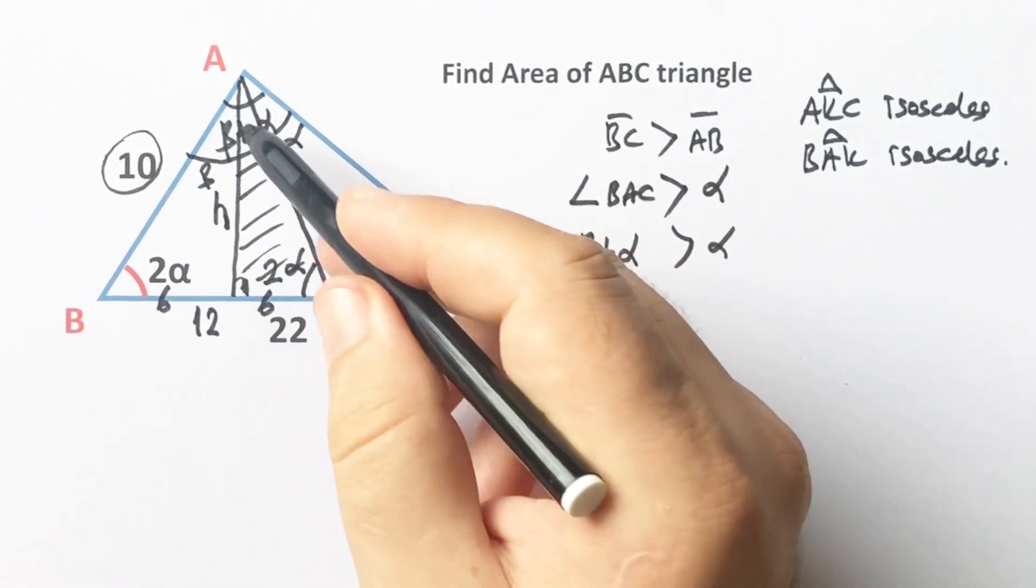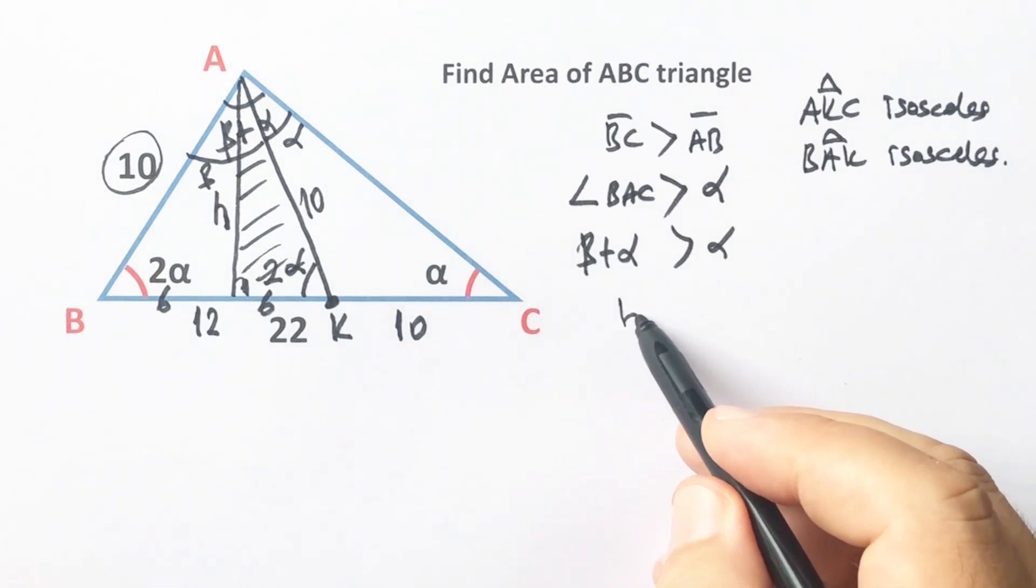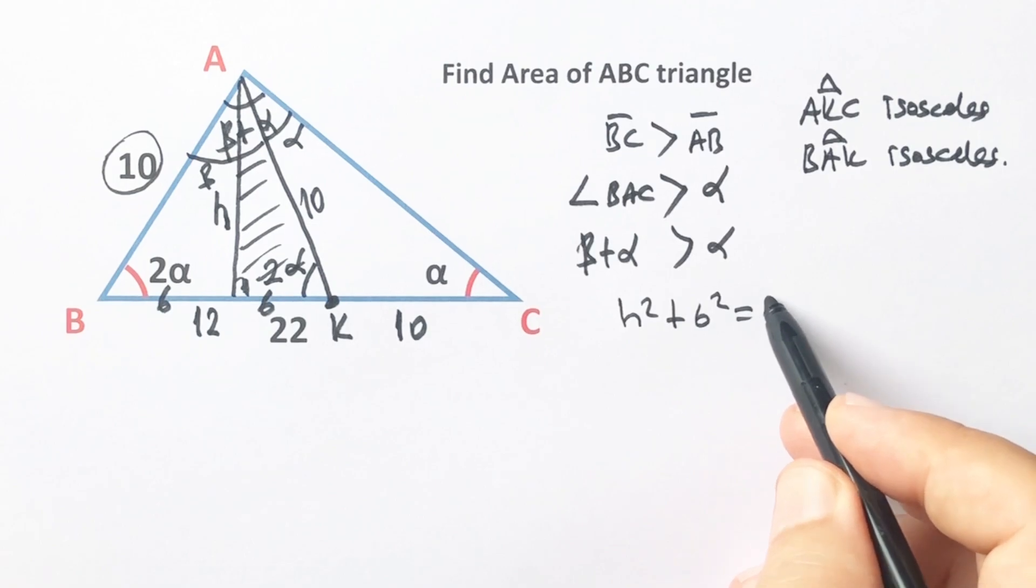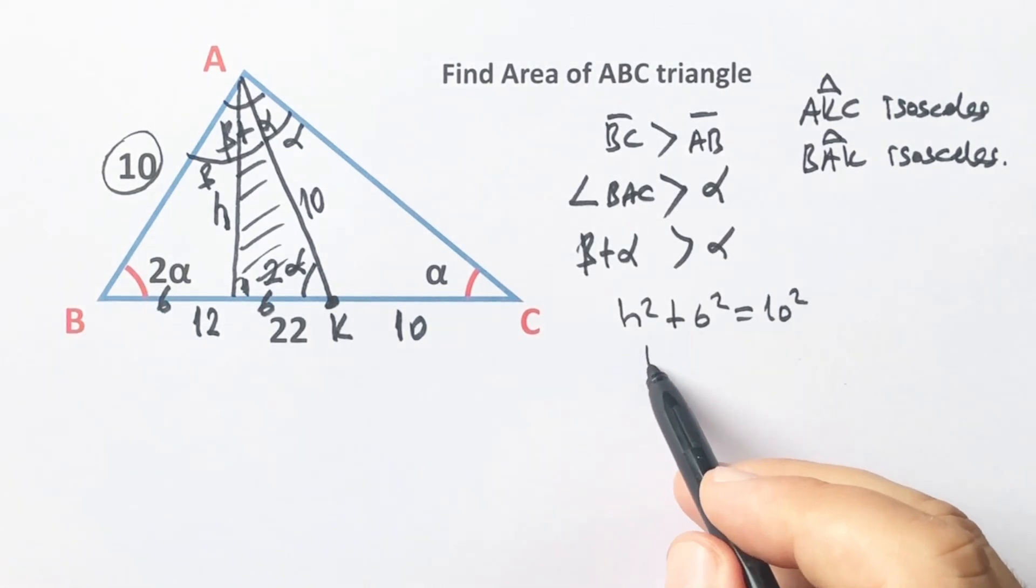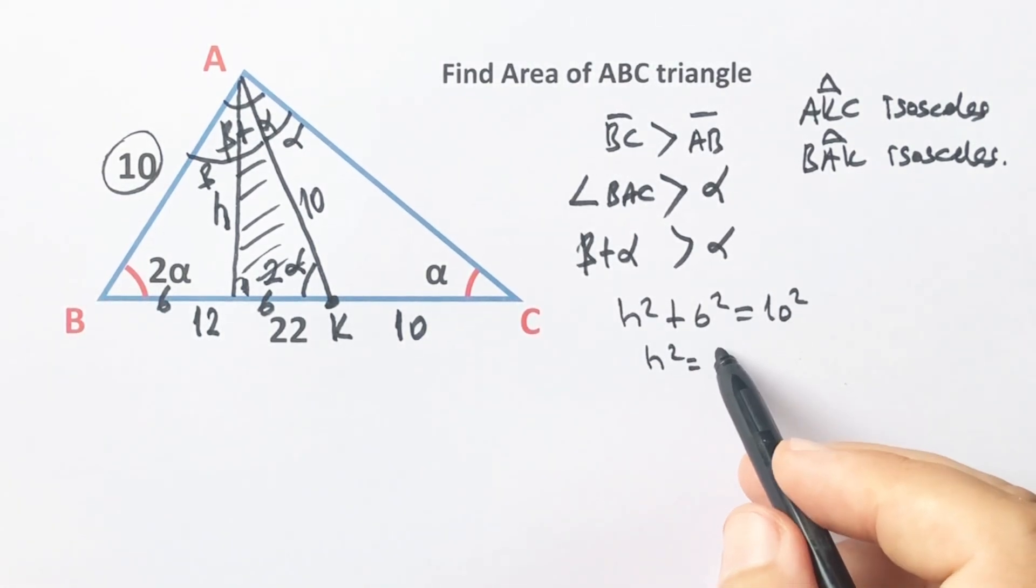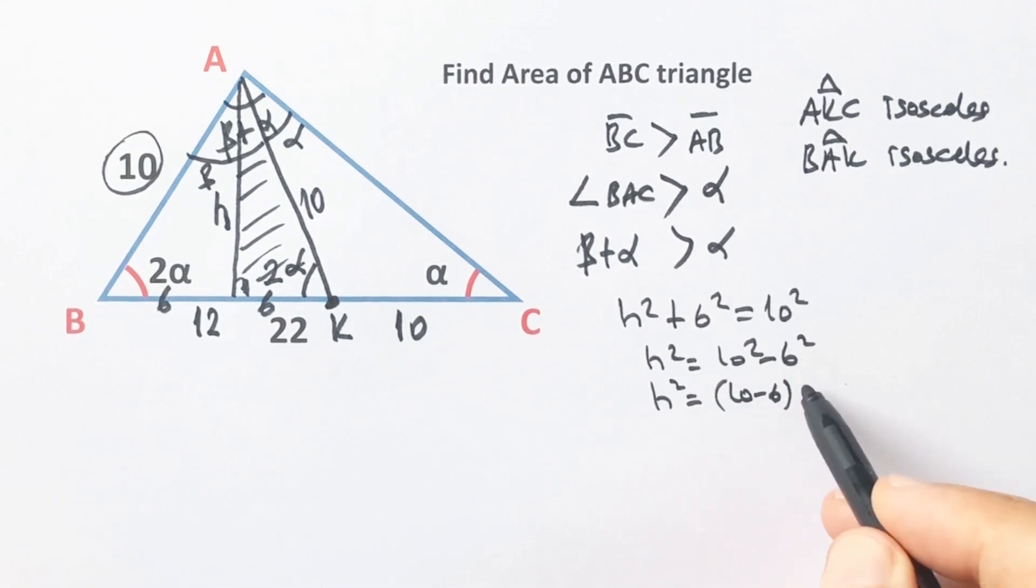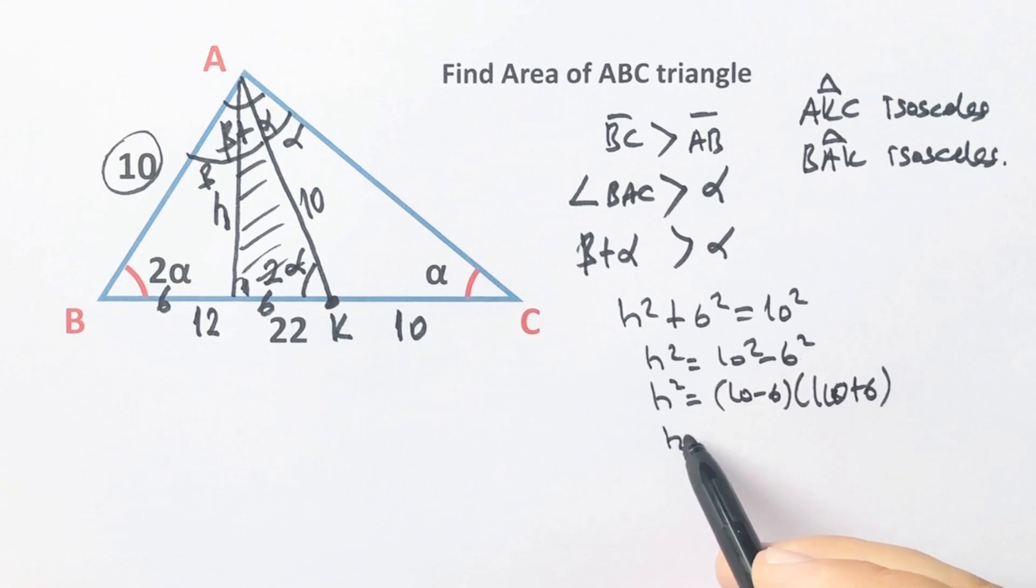If we apply Pythagorean theorem, h squared plus 6 squared equals 10 squared, right? Therefore h squared equals 10 squared minus 6 squared. H squared equals 10 minus 6 times 10 plus 6, so h squared equals 4 times 16. Therefore h equals 8 units.